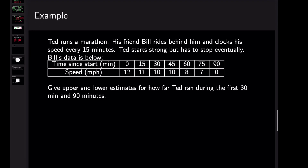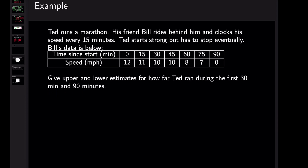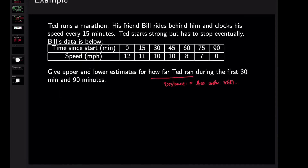From the numerical perspective, we have a table: Ted runs a marathon and his friend Bill rides behind him and clocks his speed every 15 minutes. He starts strong but has to stop eventually. We have his speed — his rate, kind of like dS/dT — and the time. Give upper and lower estimates for how far Ted ran during the first 30 minutes and 90 minutes. How far Ted ran is the distance, which is really the area under the velocity curve. How do we find that area when all we have is a table of values?